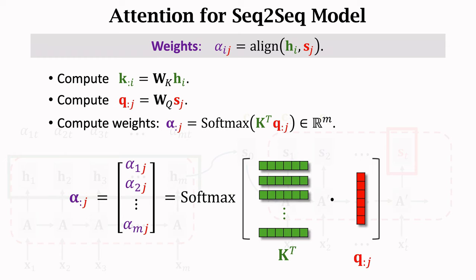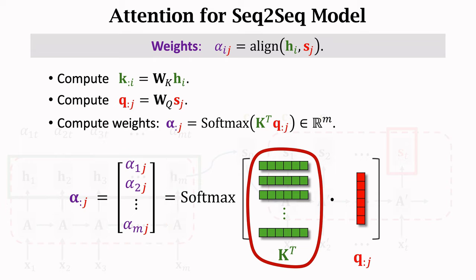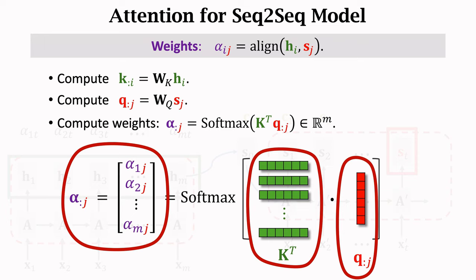This figure shows how the weights are computed. Vector alpha_J has M elements — these are the M weights. The matrix K-transpose has M rows, where each row is a transformation of a state vector H. Vector Qj is multiplied with K-transpose to produce an M-dimensional vector, which is why the output vector alpha_J is M-dimensional.